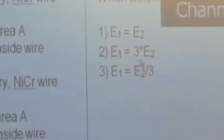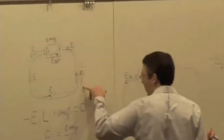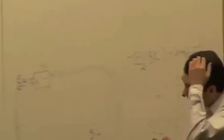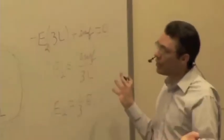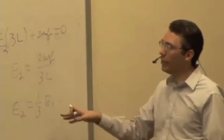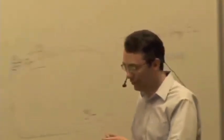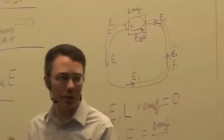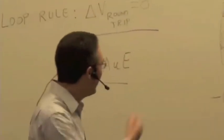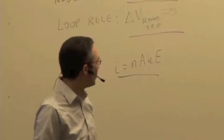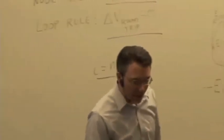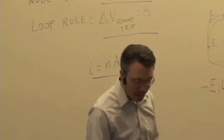So the correct answer is E1 equals three times E2. All else being equal — same battery, same thickness, same material — just changing the length causes the electric field to go down. The electric field depends on the length. This is comparing two different electric fields in two different circuits, not a node rule situation relating currents in the same circuit.